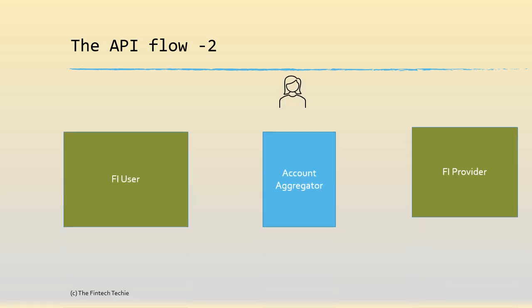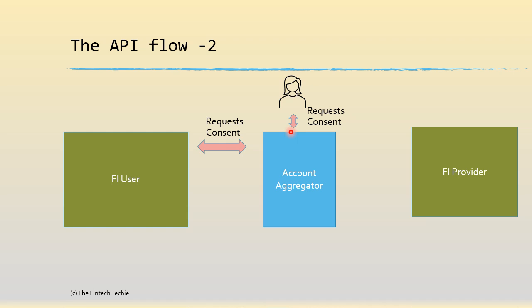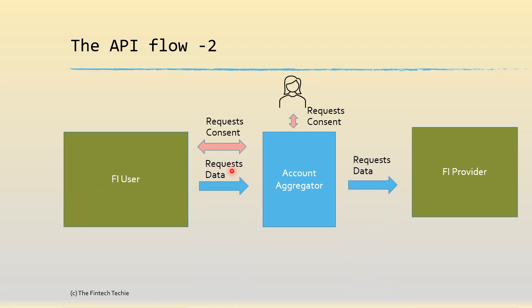So how does the API flow look? There are three stakeholders: the FI user, the FI provider, the account aggregator, and the end user. When a user requests for data, first they have to ask for consent. The account aggregator, being the fiduciary, acts as a broker between the FI user and the end user, and gets consent from the end user. The FI user then requests for the data — for example, an account balance from another provider — and the same is passed to the FI provider, who gives the response back.